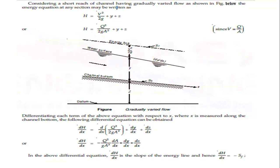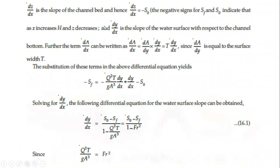In this equation, dH/dx = −Sf (energy line slope is negative as energy decreases with x), and dz/dx = −S₀ (bed slope is negative as elevation decreases with x). Substituting these values and rearranging, and noting that dA/dx = (dA/dy)(dy/dx) = T(dy/dx) where T is the top width (since dA/dy = T).